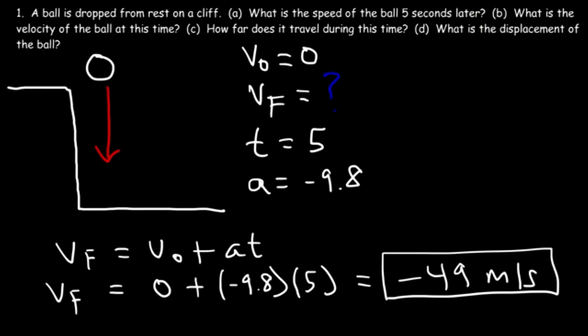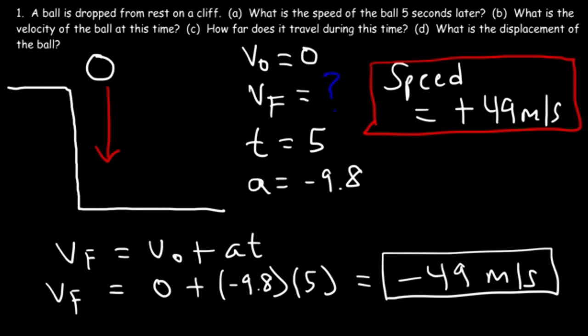What is the speed of the ball five seconds later? The speed is positive 49 meters per second - remember, speed cannot be negative, so make it positive. That's the answer for part A. For part B, what is the velocity? The velocity is negative 49 meters per second, because the ball is moving in the negative y direction. Remember, velocity is a vector quantity and speed is scalar.